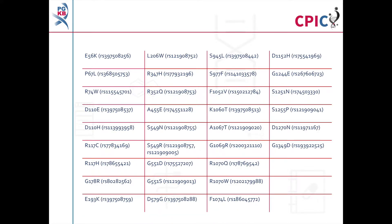Ivacaftor is currently approved by the FDA for use in patients carrying any of these class 3 variants. This list can be found in the supplementary information for this guideline and can be accessed using the link in the description below this video. There are around 1900 CFTR variants that can cause cystic fibrosis. Therefore, it is crucial that a patient's genotype is accurately identified.